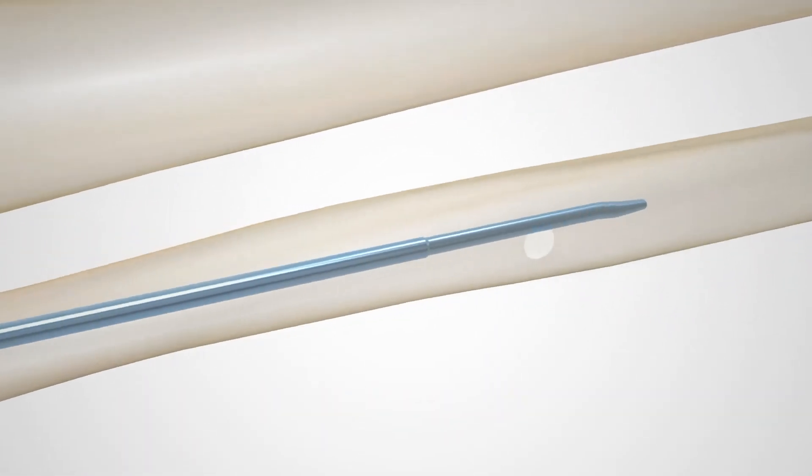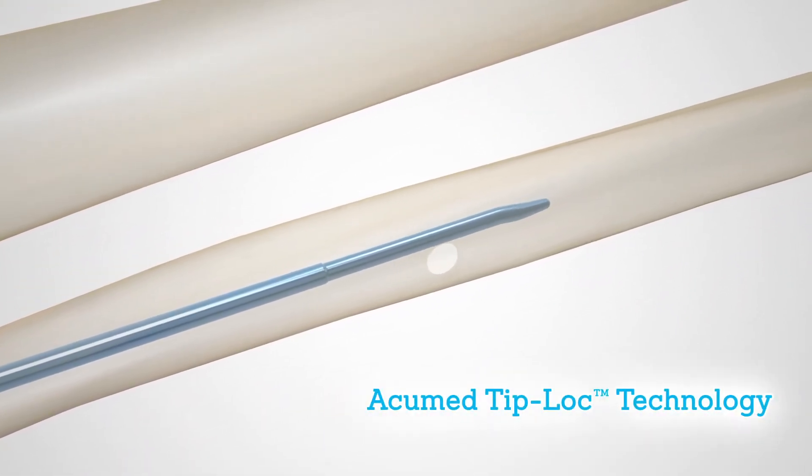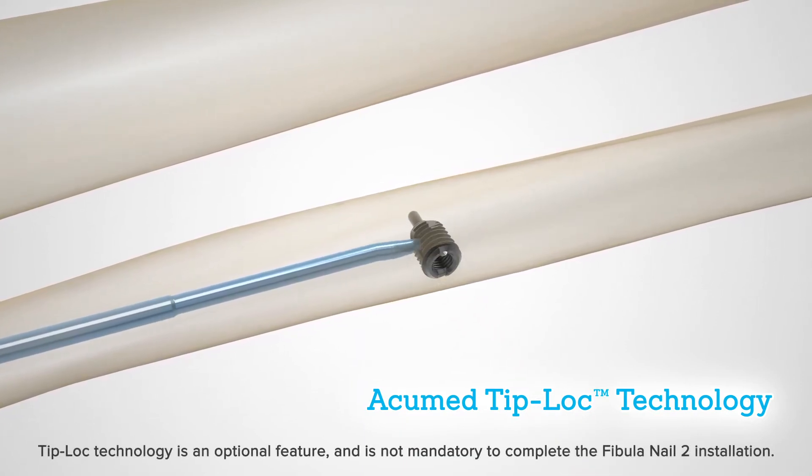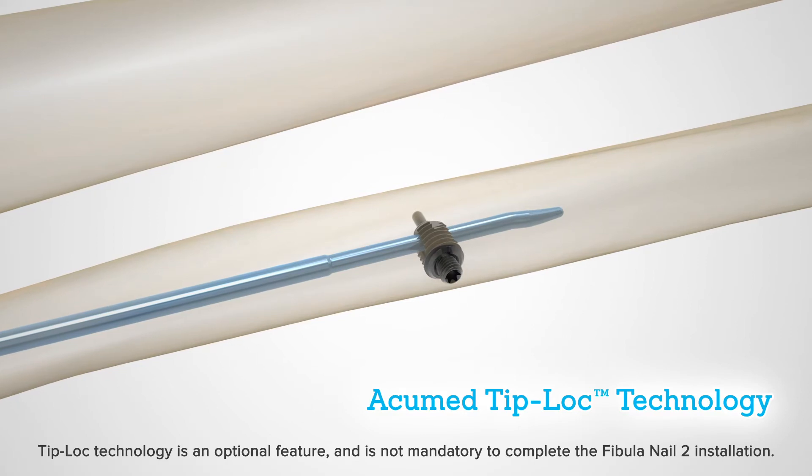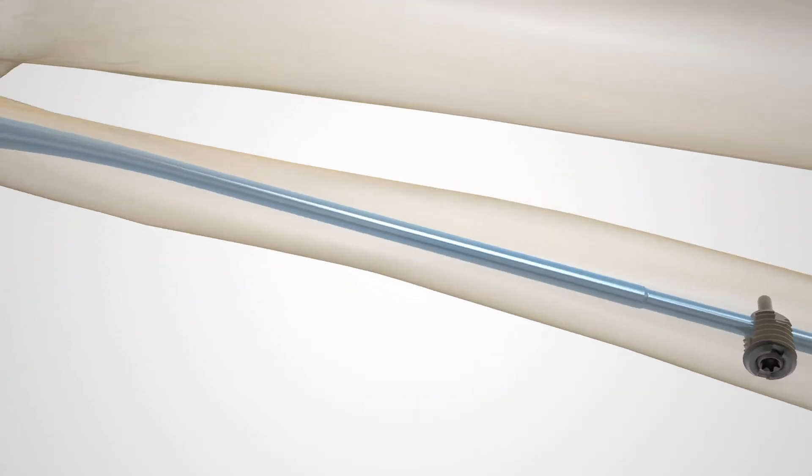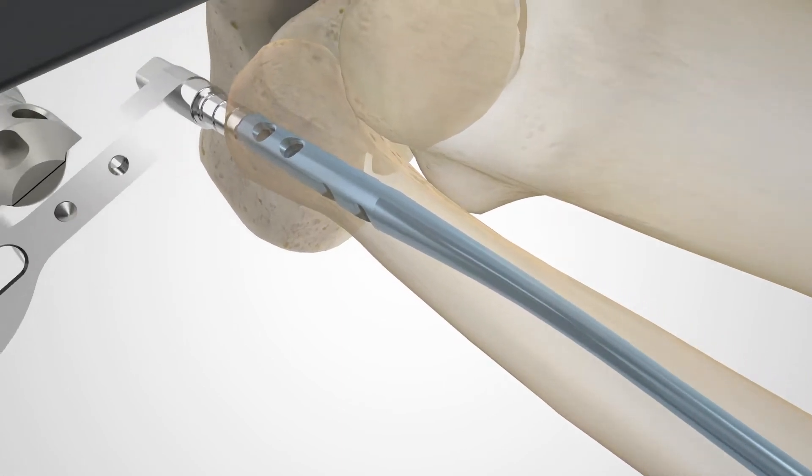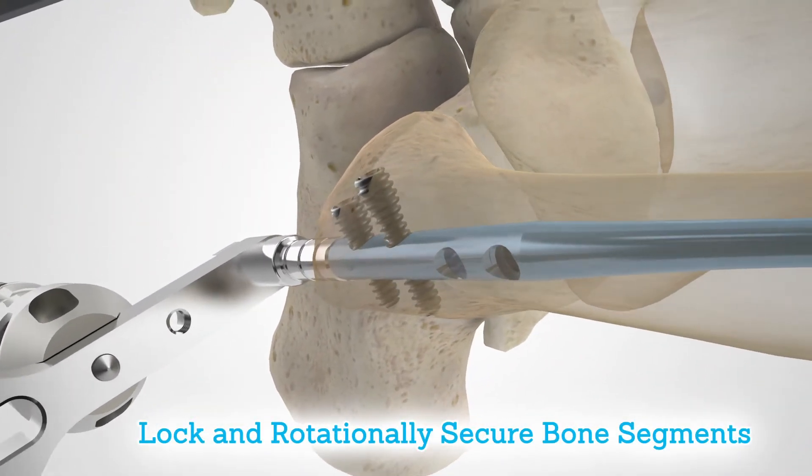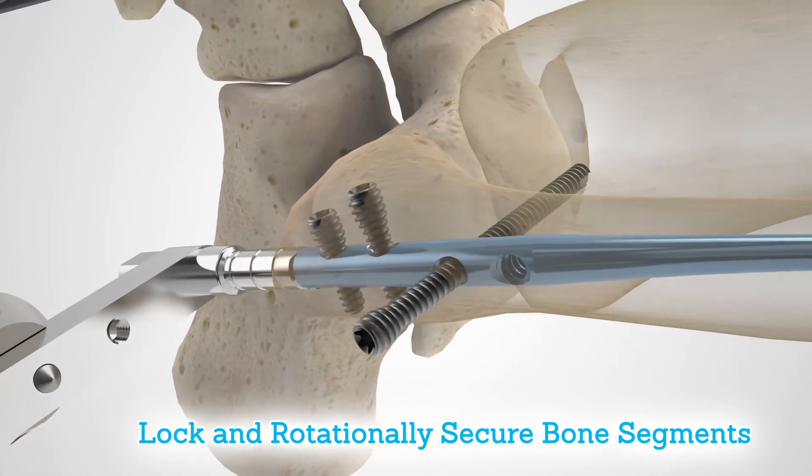Acumed's tip lock technology has been implemented as an option in both the fibula and ulna nails of this system. This technology offers the option of a set screw and bushing at the proximal end of the fibula nail. This combination and additional screws at the distal end of the nail help lock and rotationally secure bone segments to assist in fracture union.